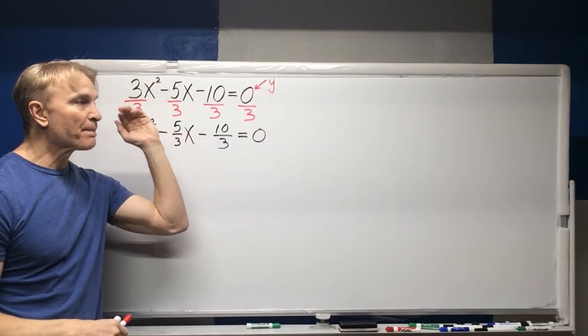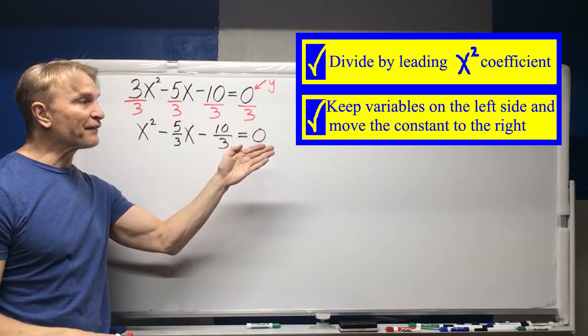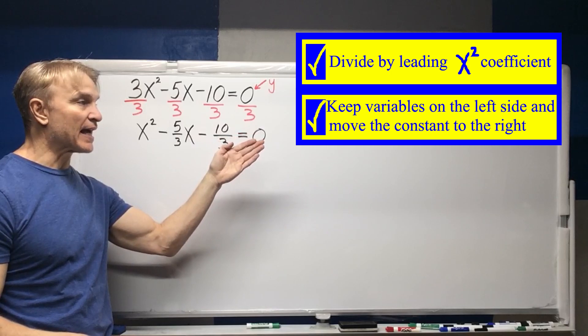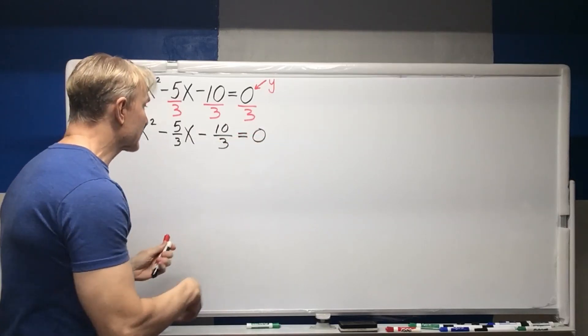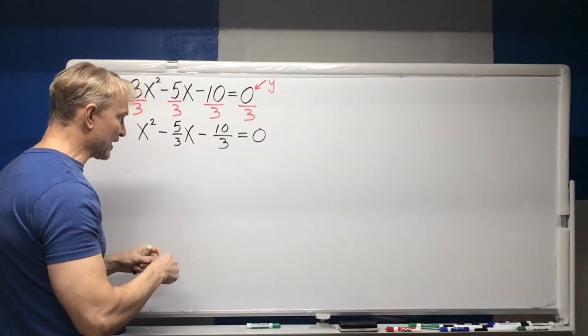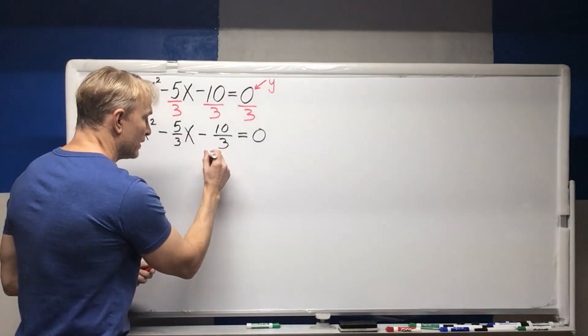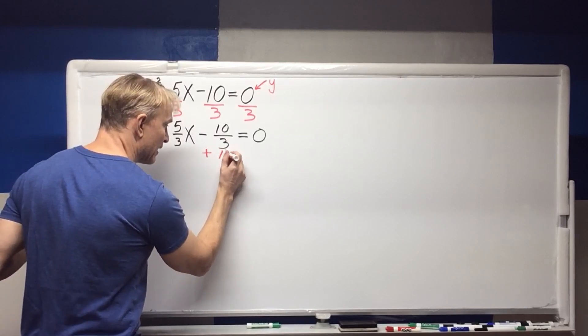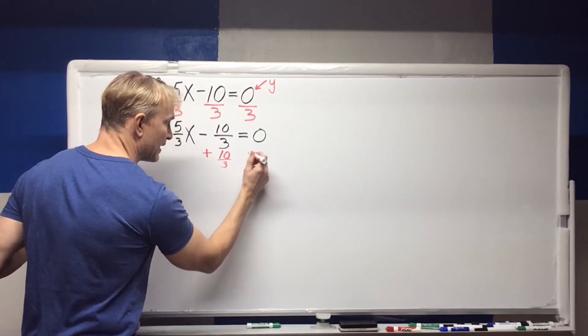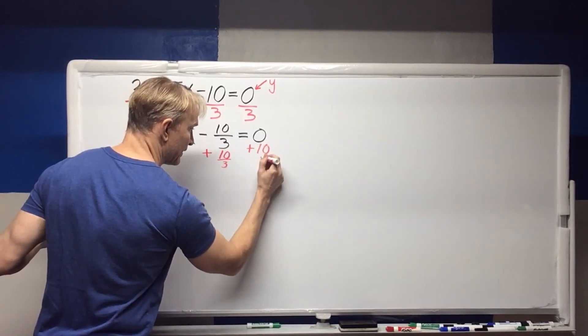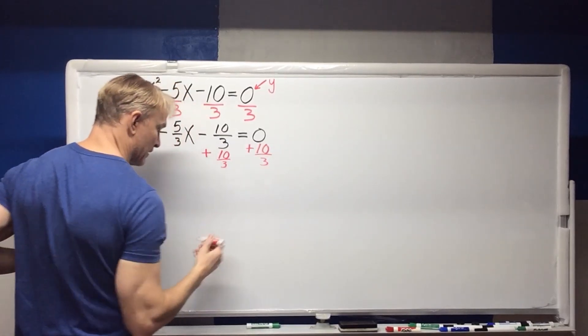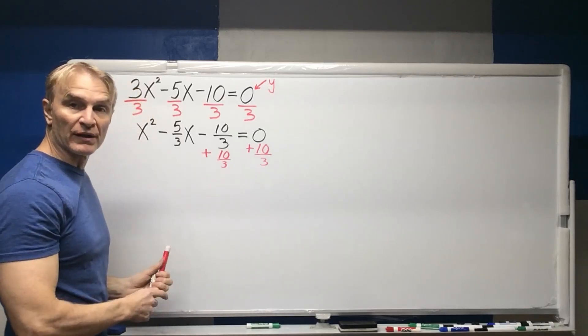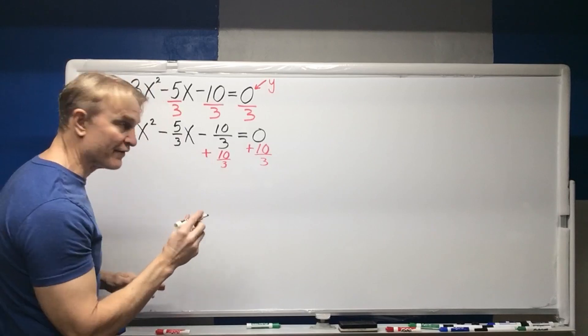Next step! Keep variable on the left side and move the constant to the right side. The constant here is negative 10 thirds. Essentially we get rid of it here by adding 10 thirds and adding 10 thirds. Let's quickly show what we have here and we'll leave an empty space for the completing of the square.